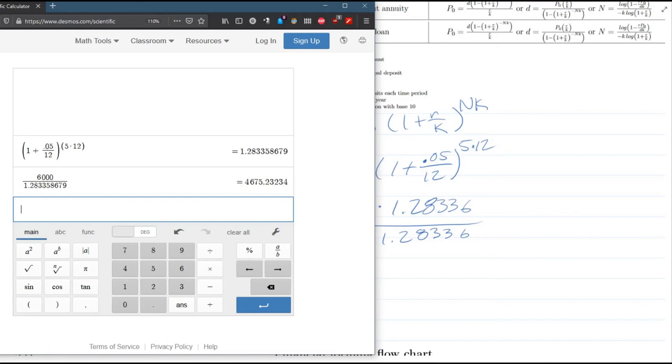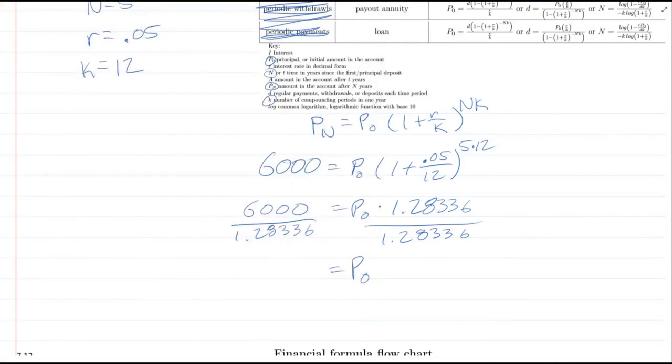All right, 4,675 point. This is a money dollar value, so we'll just keep the 23 cents. We'll throw away the rest of the decimal. 4,675.23.